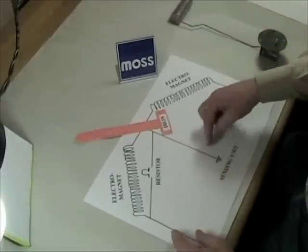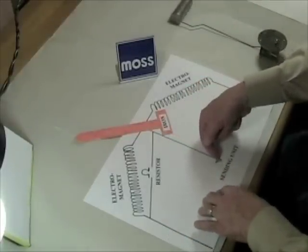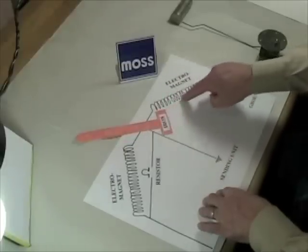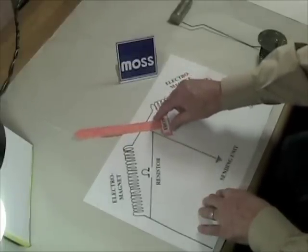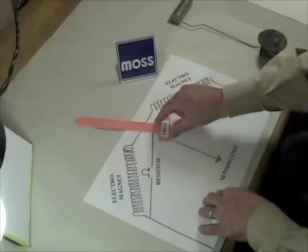As the resistance changes, we have less resistance, more electricity is going to want to go down here. If it goes down here, it doesn't go through here and this magnet becomes weaker and the gauge begins to do this. If we have less resistance, the gauge will do this.